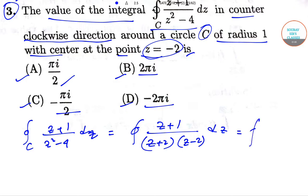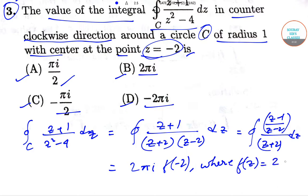This can be ultimately written down as 2 pi i into f of minus 2, where f of z is equal to z plus 1 upon z minus 2.